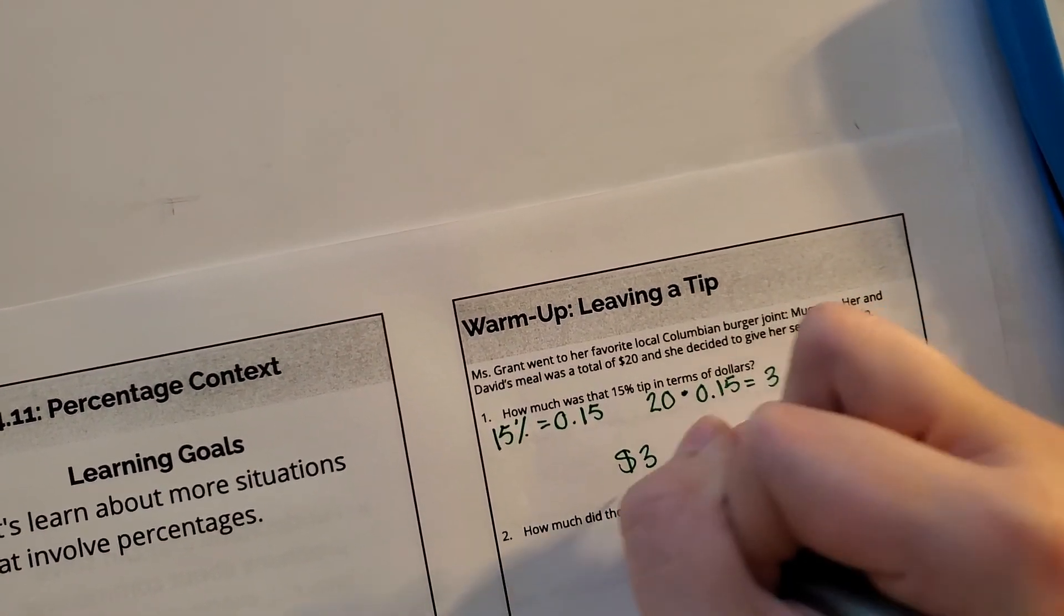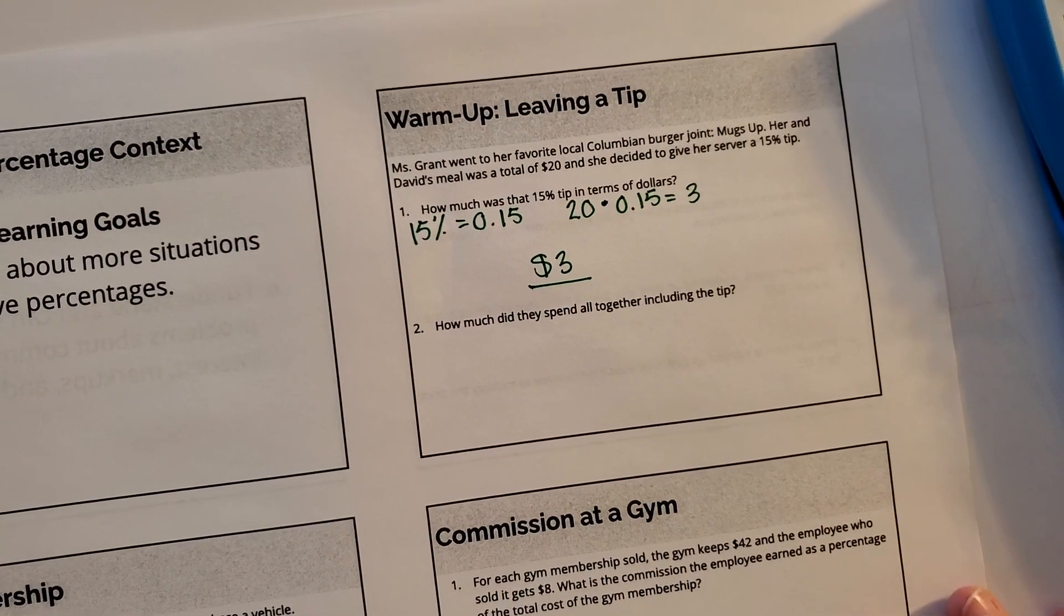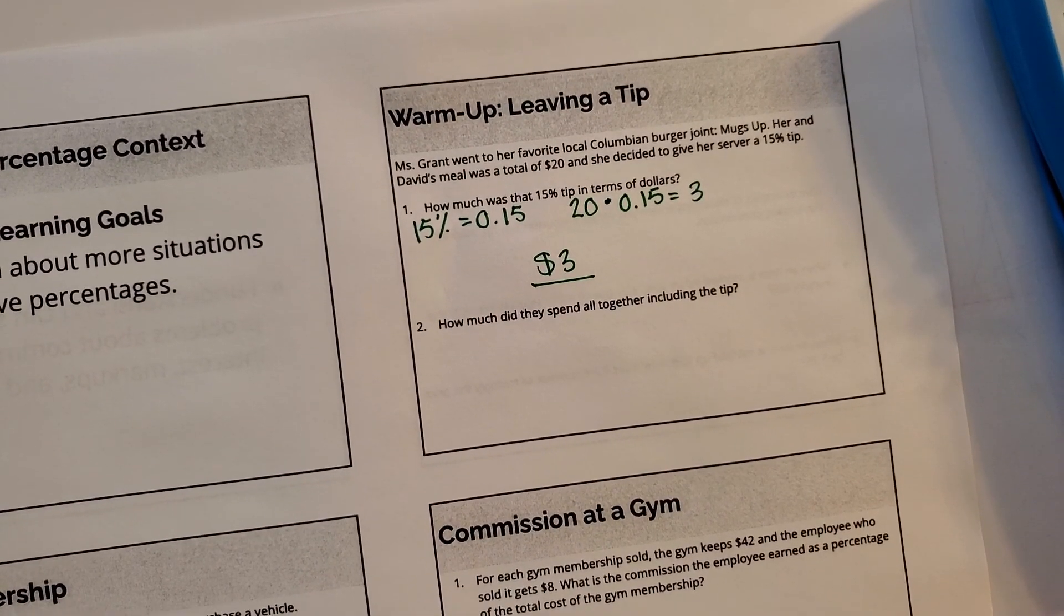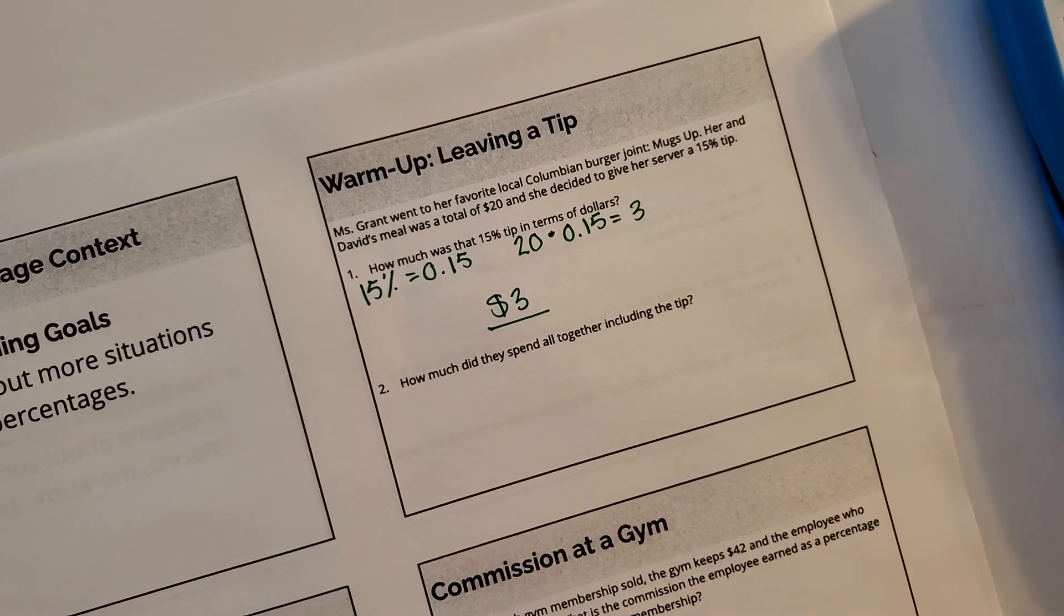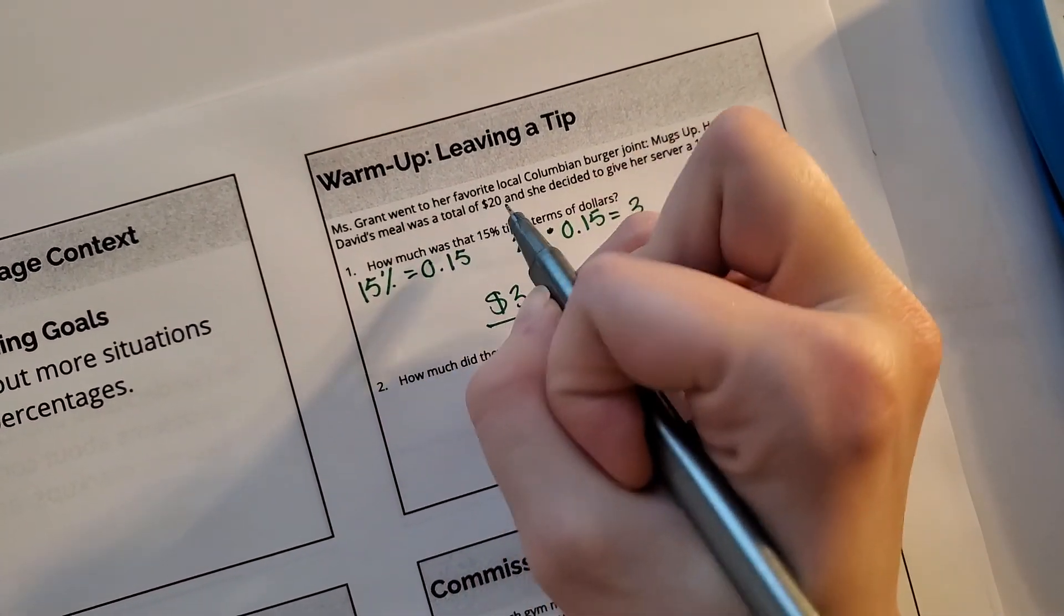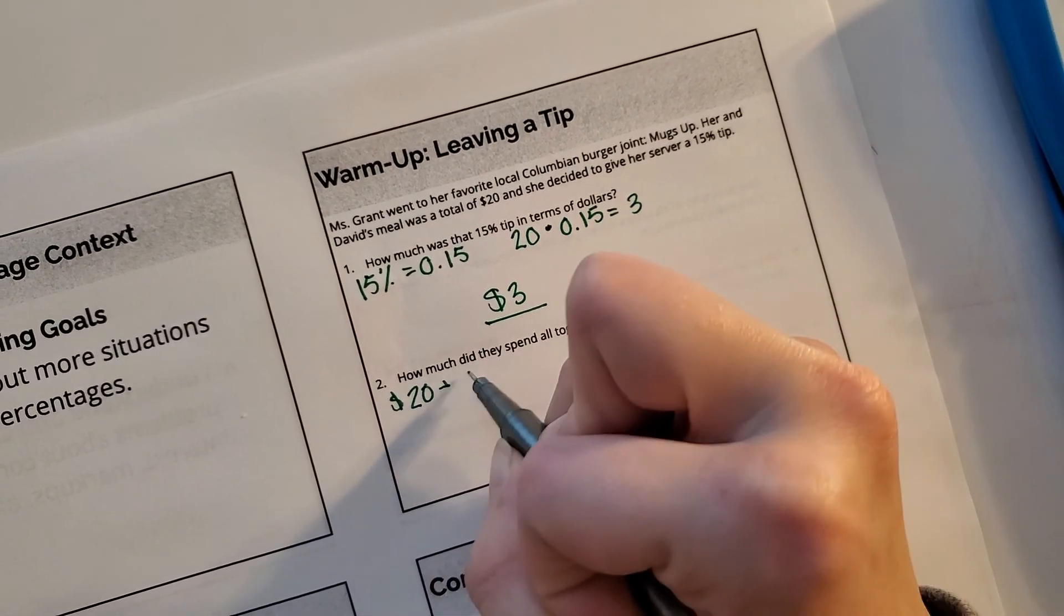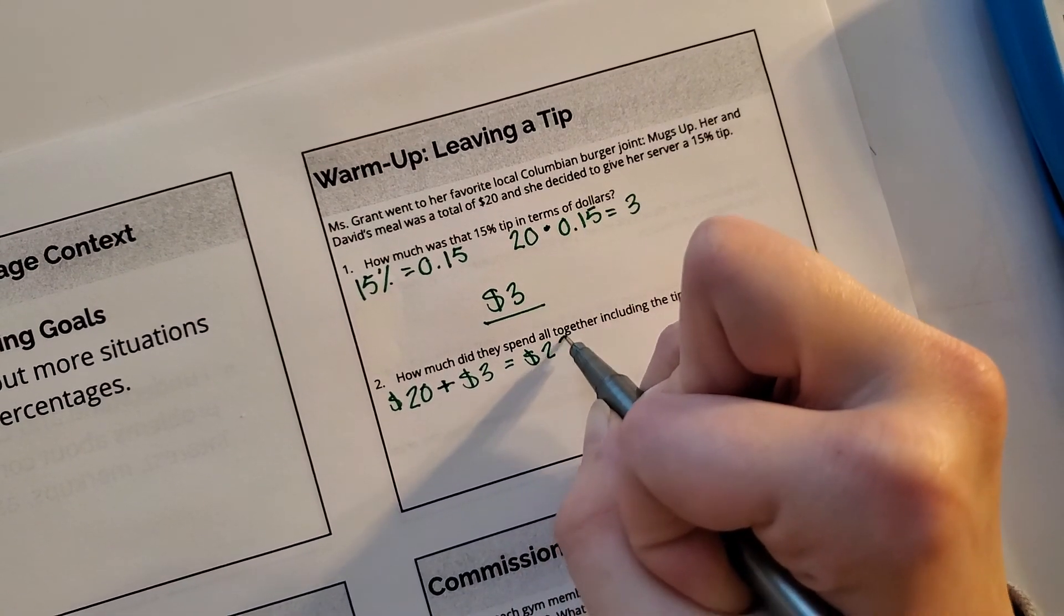So $3 would be my tip. So now, how much did we spend all together including the tip? Well, there's two different ways we can do this. The first one, I can find my total meal was $20 plus the $3 tip we left, which would simply be $23.